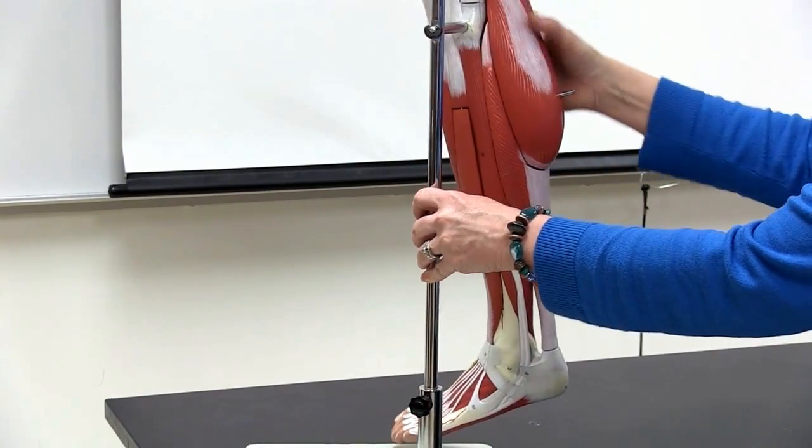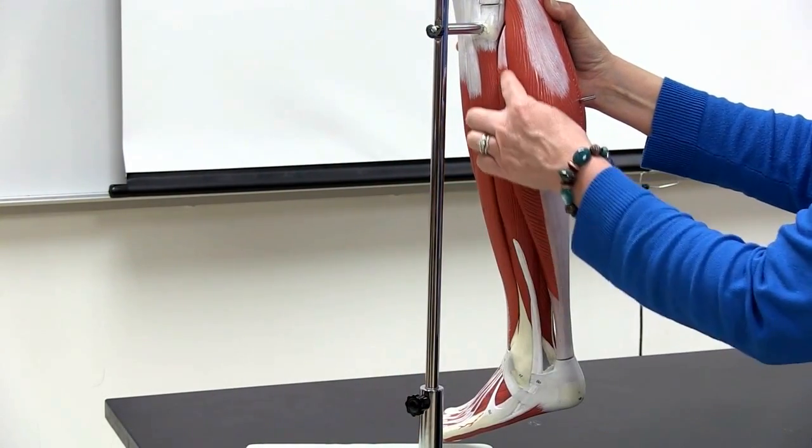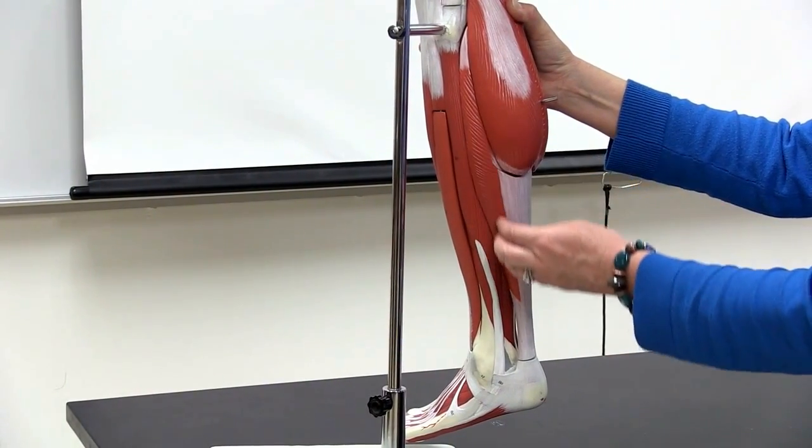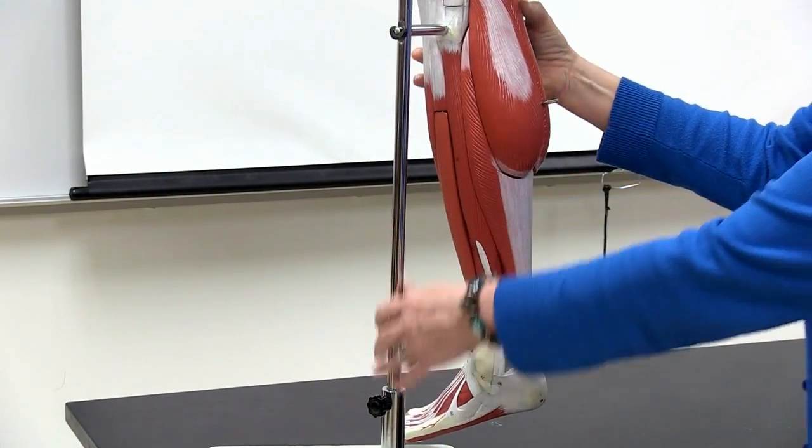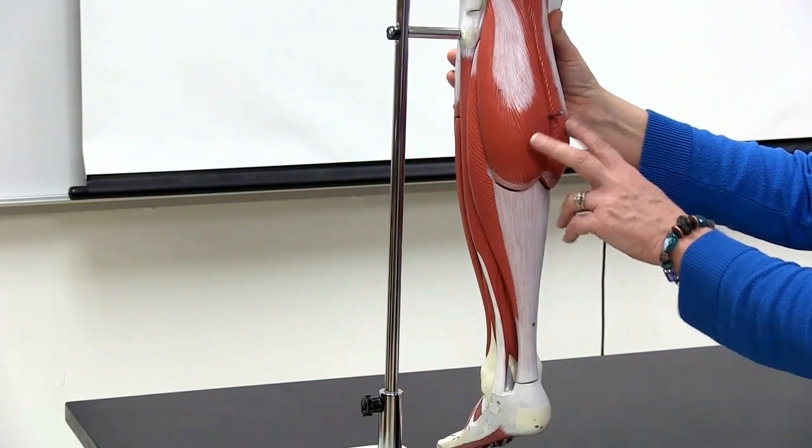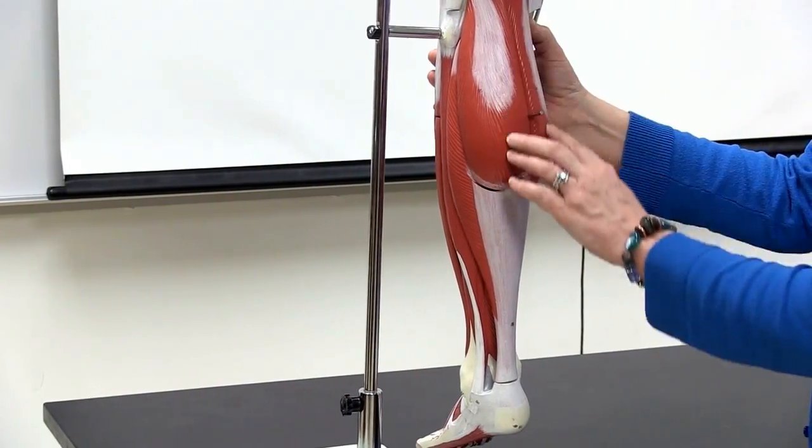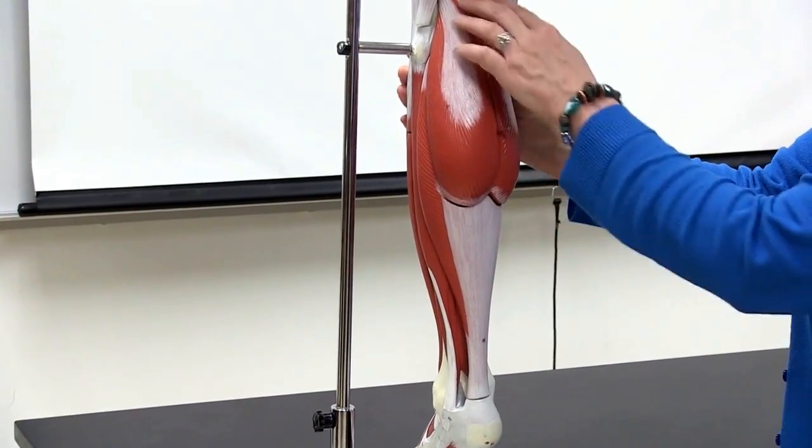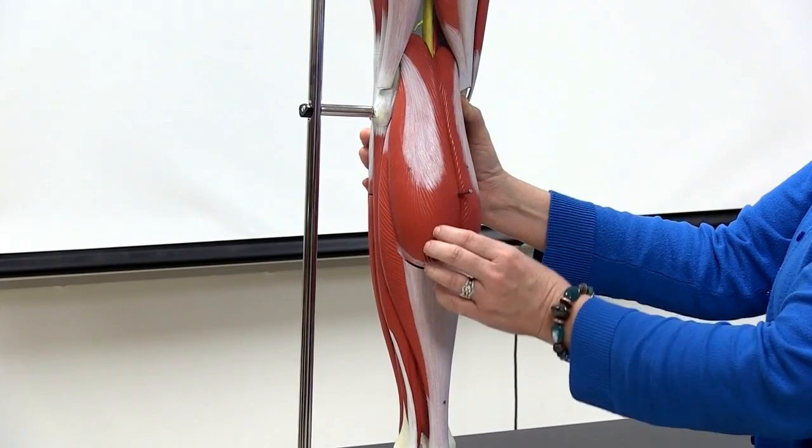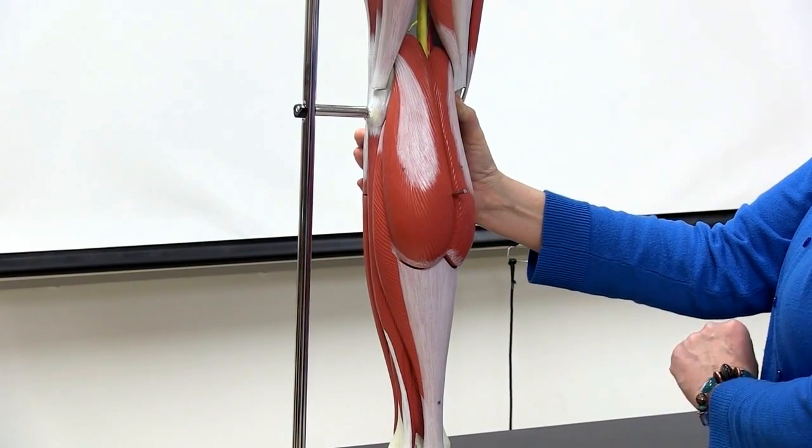The next muscle coming around here is going to be the soleus. And then on the very posterior side of the leg, you have your calf muscle. This one is gastrocnemius. It's spelled gastrocnemius, but it's pronounced gastronemius. You see that it has two heads to that muscle.